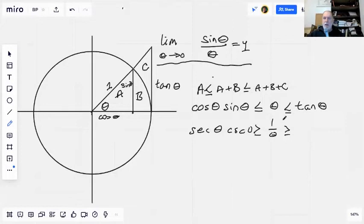Greater than or equal to one over theta, and the reciprocal of the tangent of theta is the cotangent of theta. Now we'll multiply everything by sine theta.